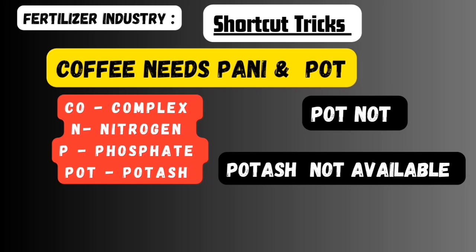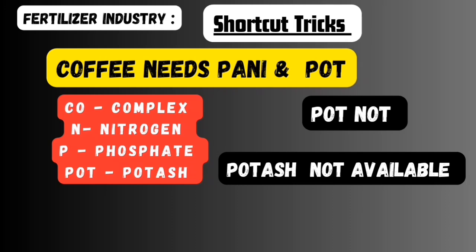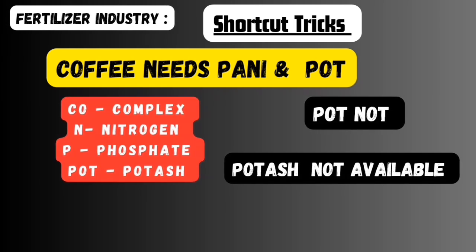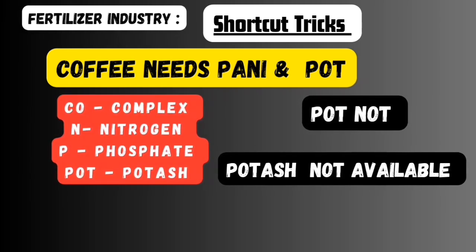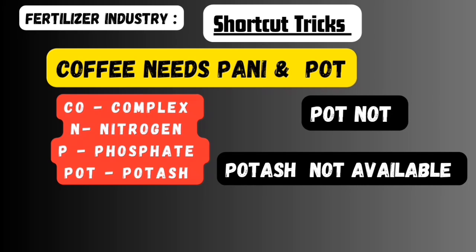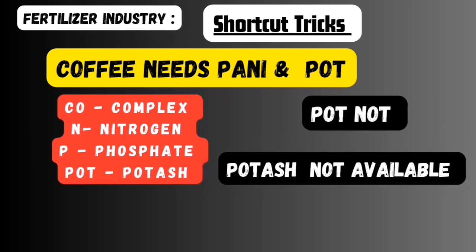Then 'pot' represents potassium. It means complex fertilizer has a combination of nitrogen, phosphate, and potash. But pot is not available here — the meaning is potash is not available in any form. So: coffee needs pani and pot, but pot is not available. Complex fertilizer has the combination of nitrogen, phosphate, and potash, but potash is not available in any form.